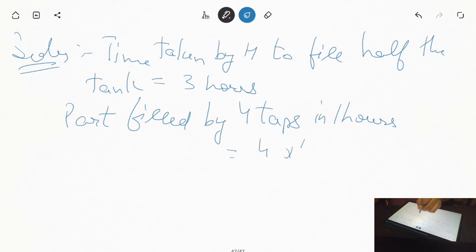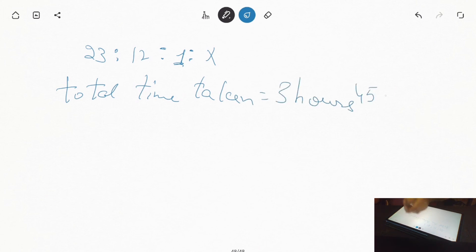Four multiply by one upon sixteen is equal to two by three. So the remaining part is 1/2, and now we will write it in ratio. Twenty, twelve, one and X. So the total time taken is three hours and 45 minutes.